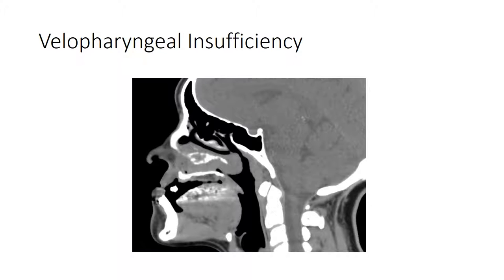Here is a patient with a history of right cleft lip and palate who, after multiple surgical repairs, had velopharyngeal insufficiency. You can note the very short soft palate, and you can imagine how it may not be able to elevate and fully close off the nasopharynx during speech.